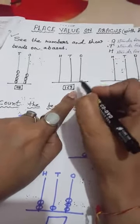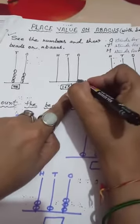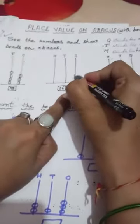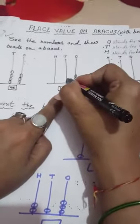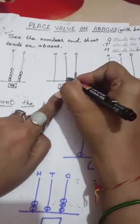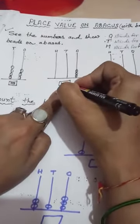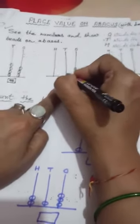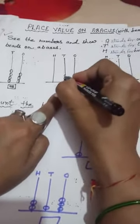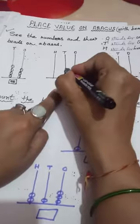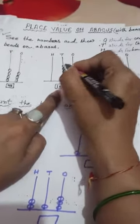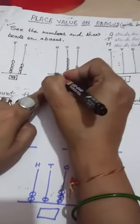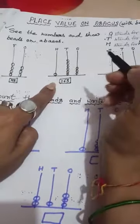Next number: 163. In ones place value, we put 3 beads: 1, 2, 3. In tens place value, which digit is there? 6. So we put 1, 2, 3, 4, 5, 6 beads. And in hundreds place value, only 1 — we show only 1 bead.